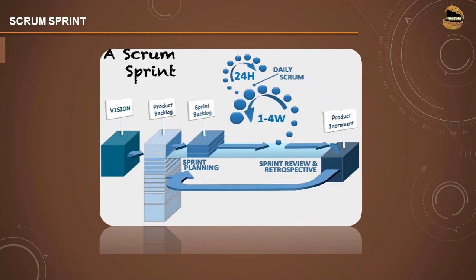Once you complete that, the sprint review and retrospective is another activity which happens at the end. We will be talking in more detail about sprint review and retrospective — the closure activities of the sprint — to understand lessons learned and common mistakes to avoid in the next sprint. Once done with the sprint, you pick up the next sprint and take the remaining tasks from the product backlog, picking another set of activities to put on the sprint backlog.